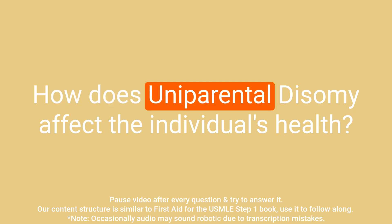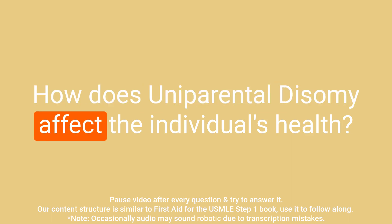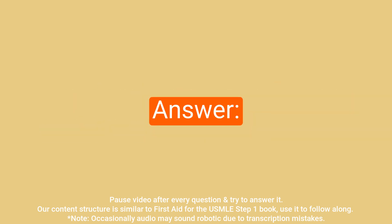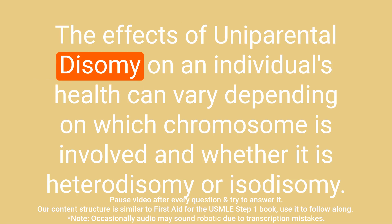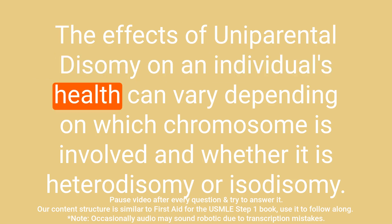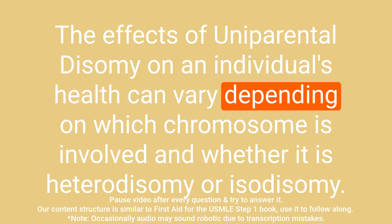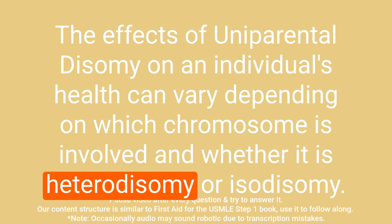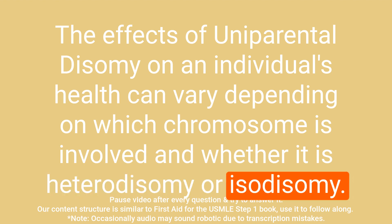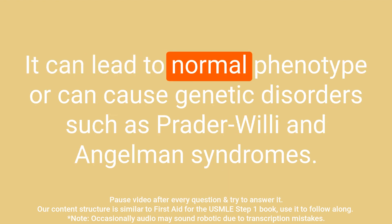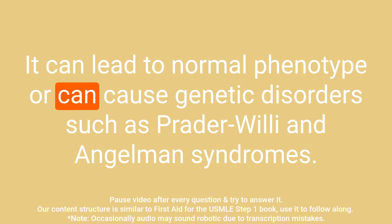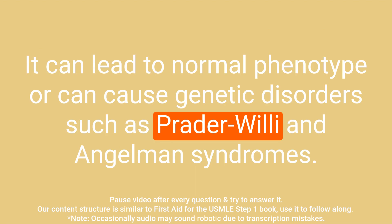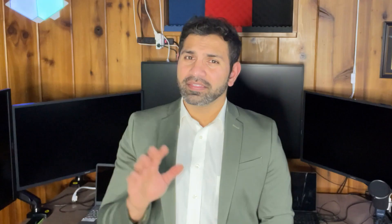Question: How does uniparental disomy affect the individual's health? Answer: The effects of uniparental disomy on an individual's health can vary depending on which chromosome is involved and whether it is heterodisomy or isodisomy. It can lead to a normal phenotype or can cause genetic disorders such as Prader-Willi and Angelman syndromes.